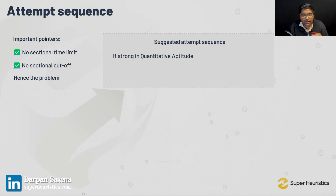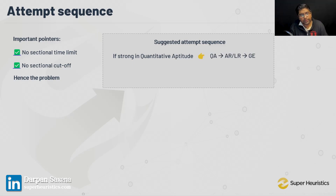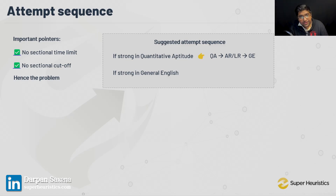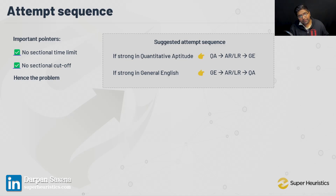Therefore, my advice — this is the golden advice which you need to keep in your mind. It depends on who you are. If you're somebody who's strong in QA, who has a general affection towards QA, who likes QA, then your attempt sequence should be: QA, followed by Analytical and Logical Reasoning, followed by General English last. Whereas if you're somebody strong in General English, then I would just reverse this sequence — start with General English, then go to Analytical and Logical Reasoning, and then QA.